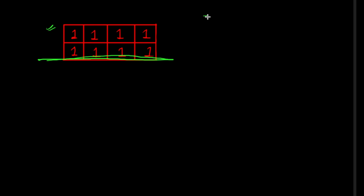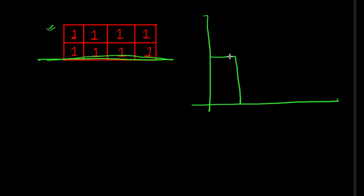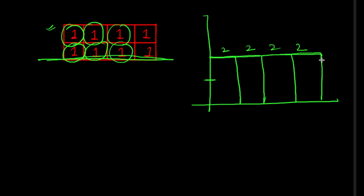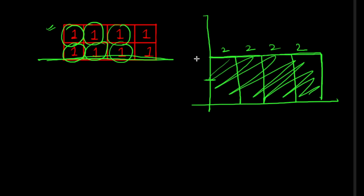Now consider the second row as a base. The bars will have heights of two, two, two, two — because one plus one is two. So the height of each bar will be two. The maximum area in this case is height two multiplied by four columns, which equals eight.